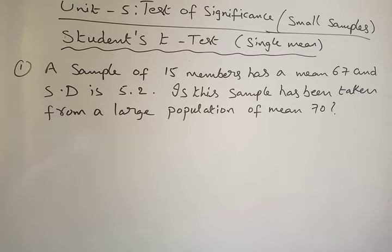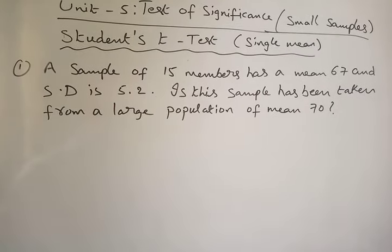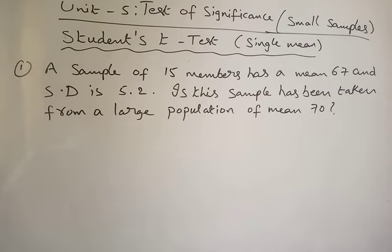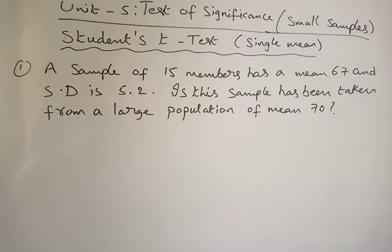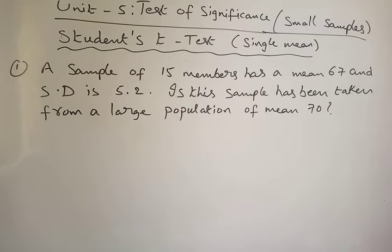Hi everyone, welcome to our online class. In last class, we started Unit 5: Test of Significance for Small Samples. In this topic, we have three tests: the Student t-test, F-test, and Chi-squared test. Yesterday we started the Student t-test and completed three to four problems, and I gave you all the formulas. Today we will see more problems on the Student t-test for small samples.